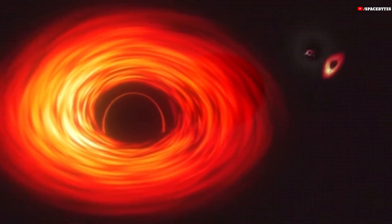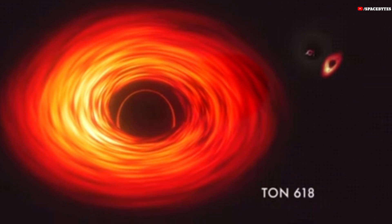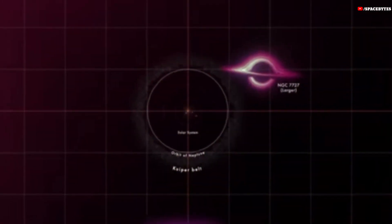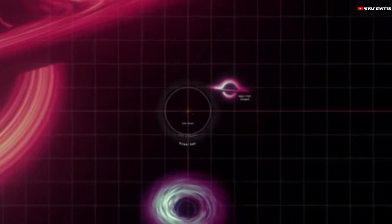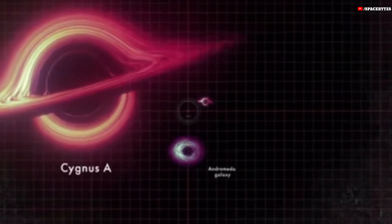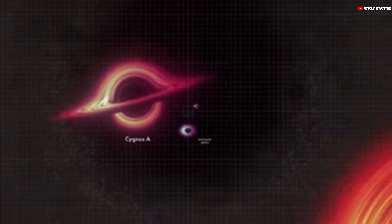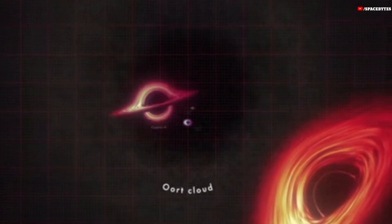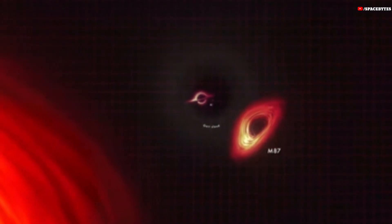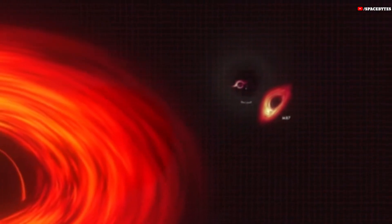TUN-618 is a distant quasar with an incredibly massive black hole, producing immense energy. Its activities provide clues about supermassive black holes and their role in shaping galaxies over cosmic time. TUN-618 is an ultramassive black hole located in the center of a distant quasar, approximately 10.4 billion light-years away from Earth.